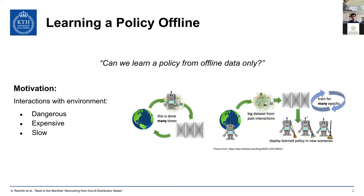This offline assumption opens up a number of problems when learning a policy, but the upside is that if we manage to learn a policy optimally from offline data, it would be the same kind of revolution that ImageNet had on computer vision — where everything can be done fully offline without special equipment, and you can just train your models. That's the kind of revolution this big dataset approach has sparked throughout the machine learning field.